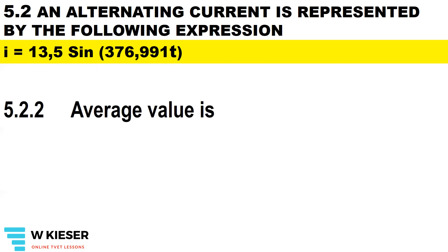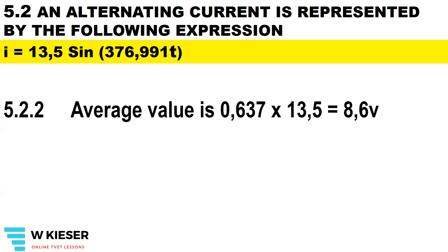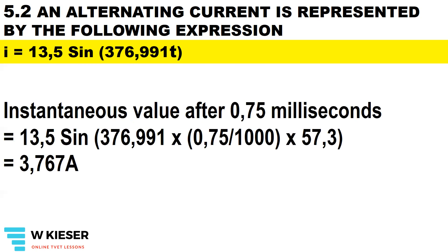To determine the average value, it is 0.637 multiplied by the maximum value, and therefore the average value is 8.6 volts. To determine the instantaneous value after 0.75 milliseconds — to convert milliseconds into seconds, we divide by 1000. Don't forget to multiply by 57.3 to convert radians per second into degrees. 13.5 is the maximum value, sine for a sinusoidal waveform, and then we have our phase angle in the brackets, and we end up with an instantaneous value of 3.767 amps.